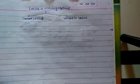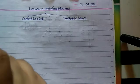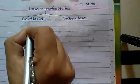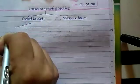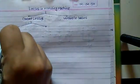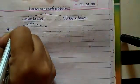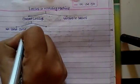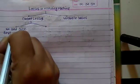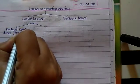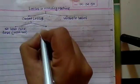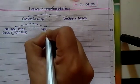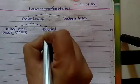Constant losses are further divided into two parts: no-load losses, also called core loss or iron loss, and mechanical losses.